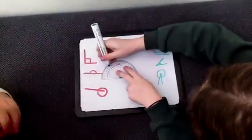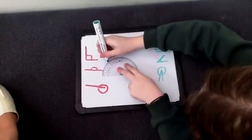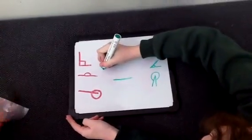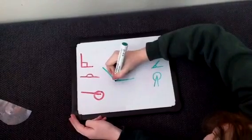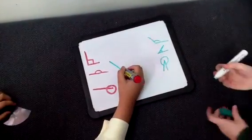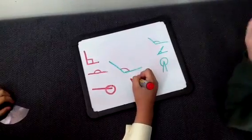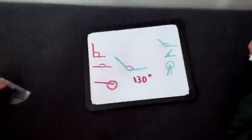And use the inside numbers. So it's about 130. You take it off and then line it up like dot to dot. And then you put something like this. And that is a 130 degree angle.